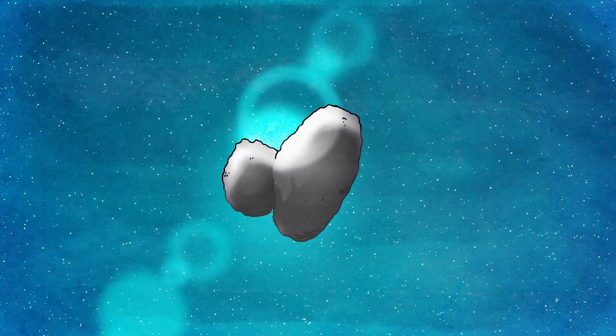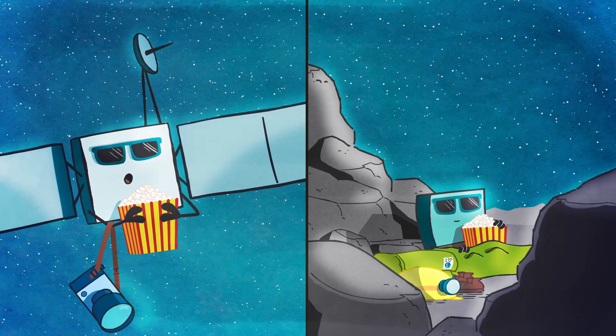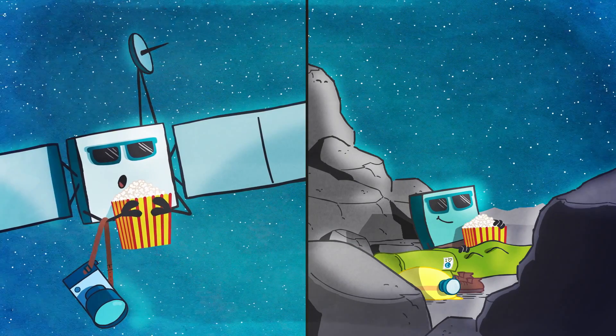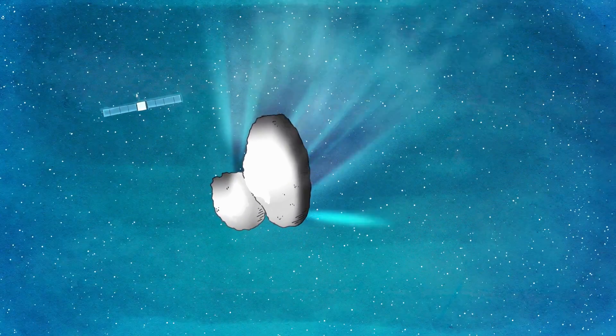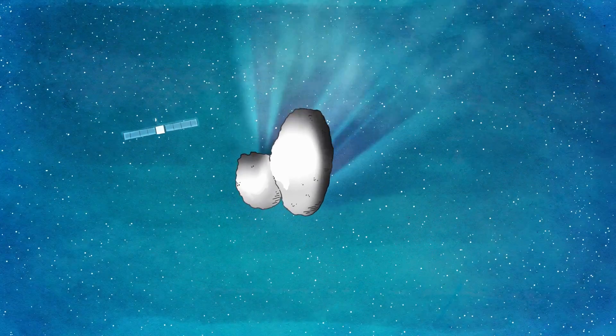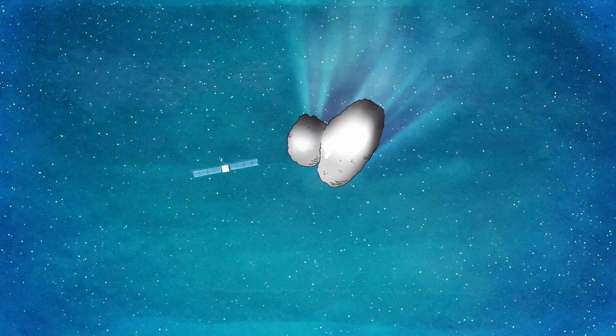As the comet reached its closest point to the Sun, Rosetta and Philae were very excited to witness this once-in-a-lifetime event, and they looked forward to seeing what would happen to the comet over the next year as they headed back towards the outer solar system.